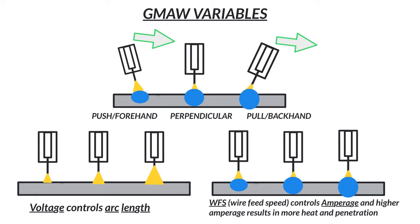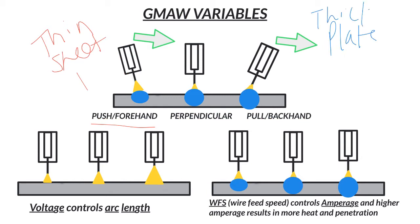Push forehand is great for thin metals such as sheet metal. If it's thin, push. Obviously our pull or backhand mode is better for plate or thicker metals in general. 3/16ths is the divider between plate and sheet. So if you're around there, you can technically run it hot and do a push, or run it a little lower and do a backhand to make up some of the penetration loss. Just a little bit of extra penetration on the pull or backhand.